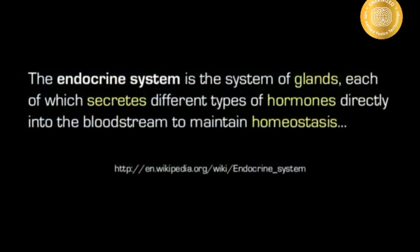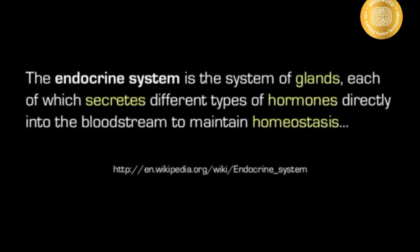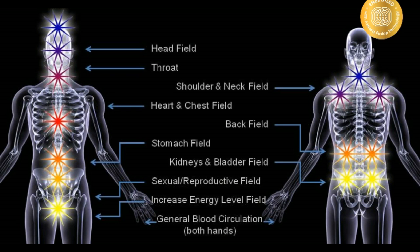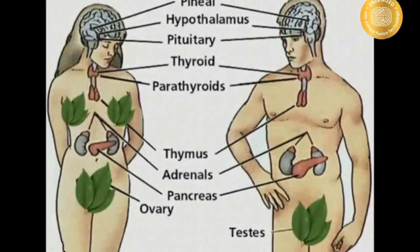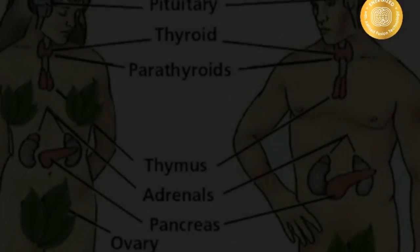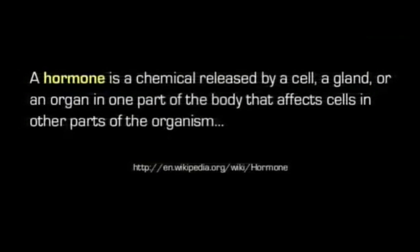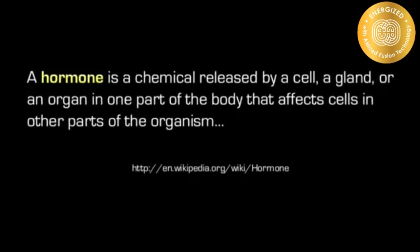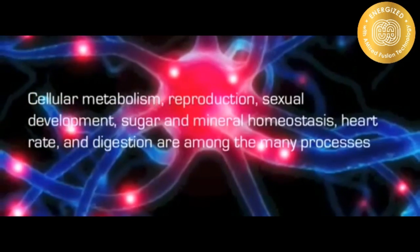The endocrine system is the system of glands, each of which secretes different types of hormones directly into the bloodstream to maintain homeostasis. A hormone is a chemical released by a cell, a gland, or an organ in one part of the body that affects cells in other parts of the organism.